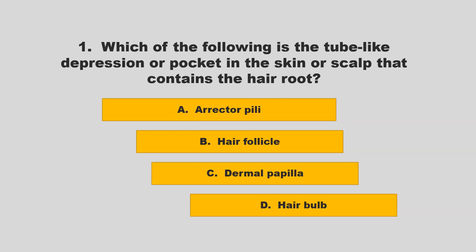Which of the following is the tube-like depression or pocket in the skin or scalp that contains the hair root? Is it the erector pili, the hair follicle, the dermal papilla, or the hair bulb? If you chose B, hair follicle, you are correct.